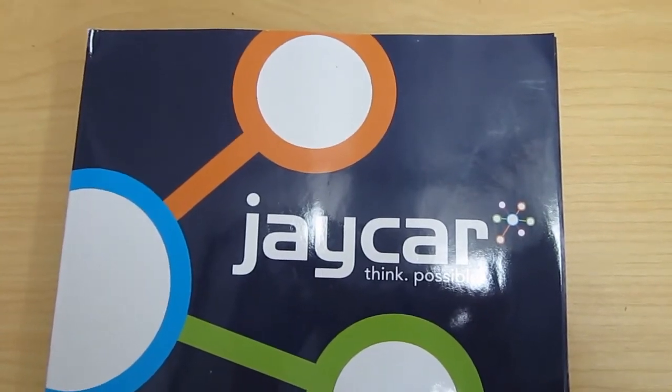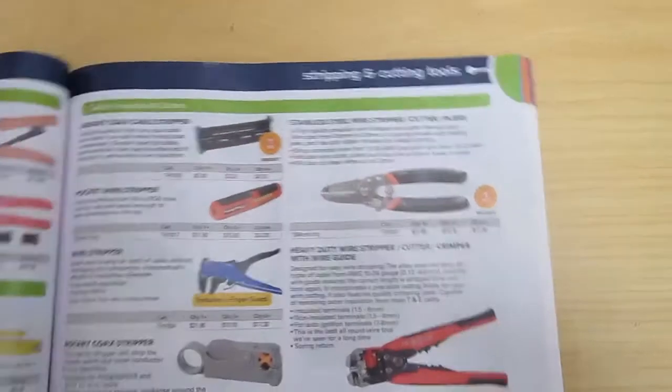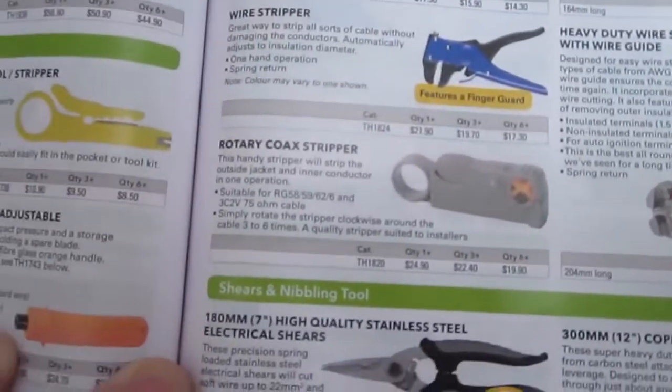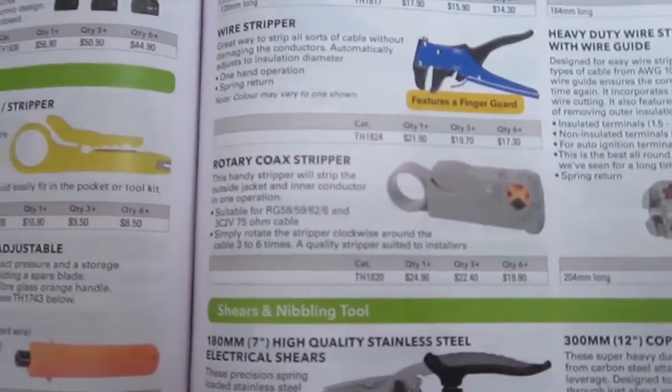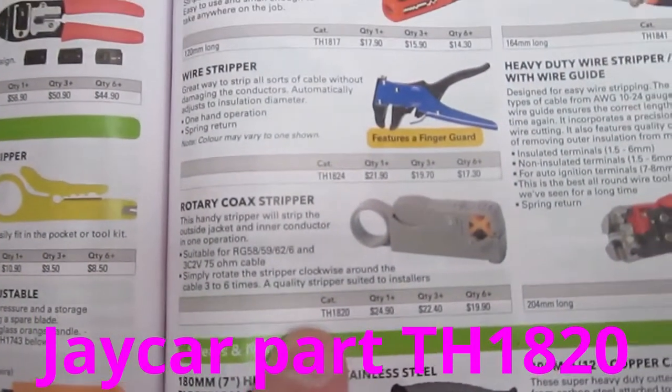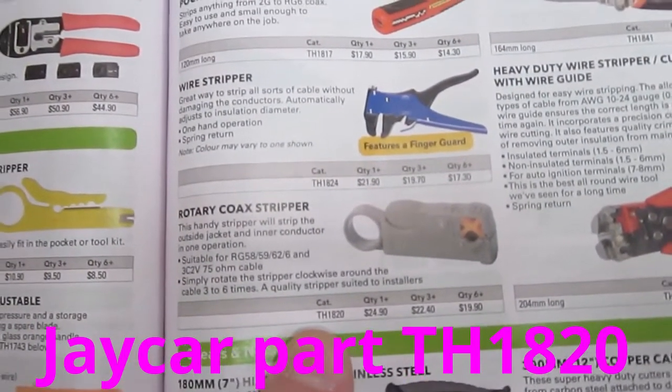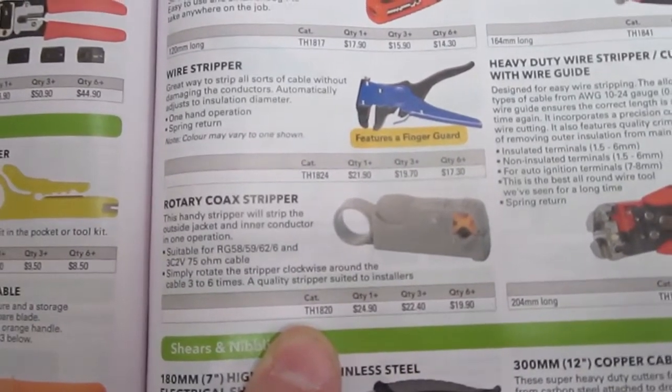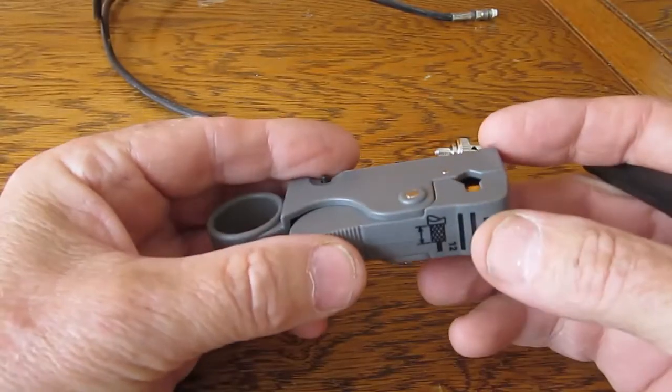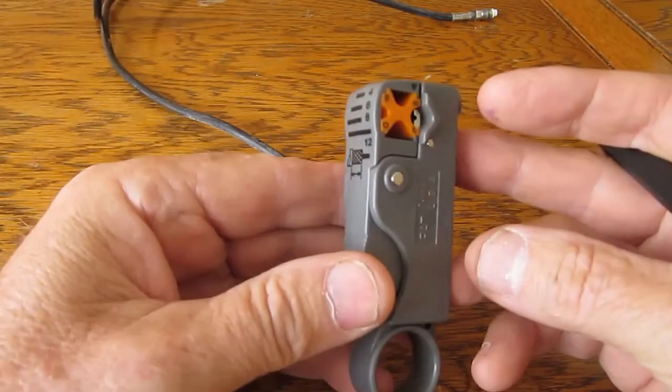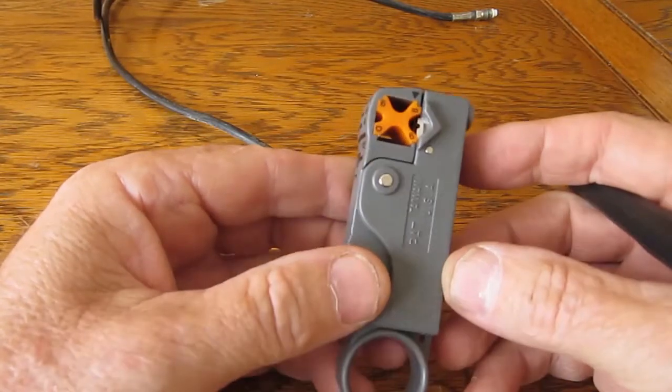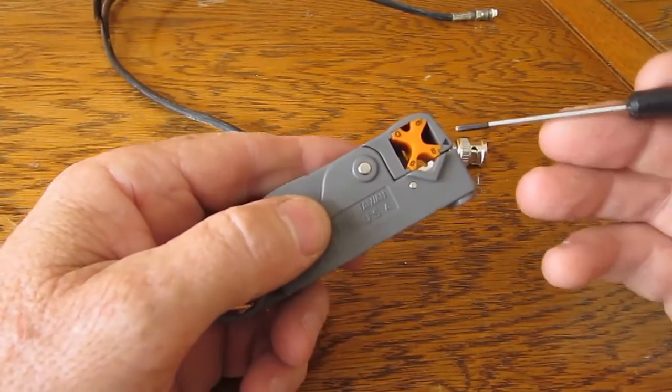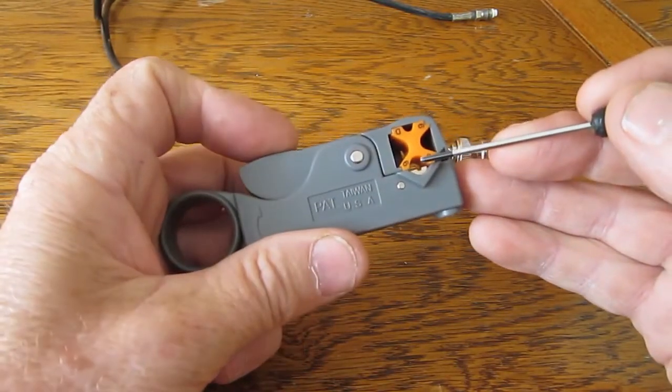Well, here's my J-car catalog. If we turn the page and have a look inside, there's the stripping tool. The part number of the stripping tool is TH1820, but the purpose of this video is to go through the process of setting this tool up. There's a number of settings that have to be made.